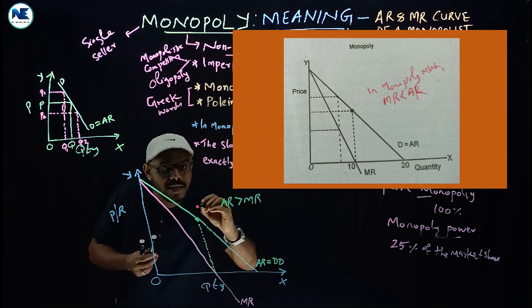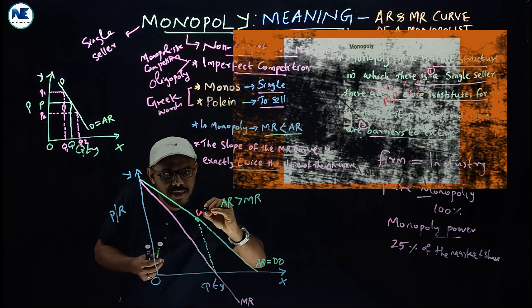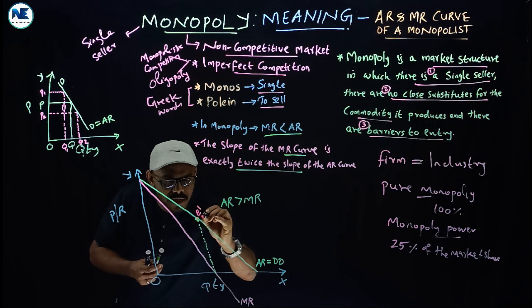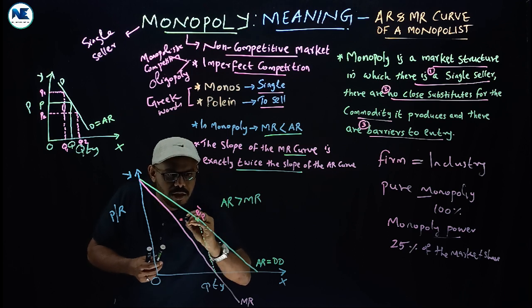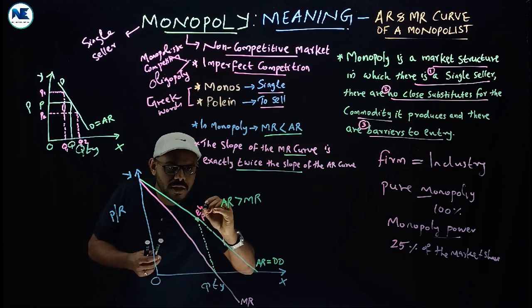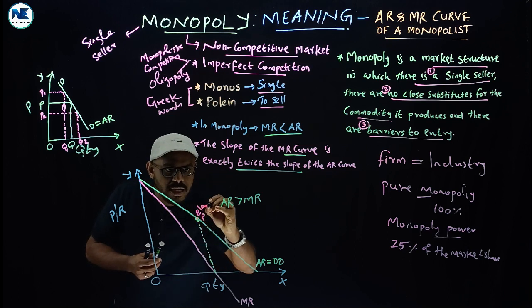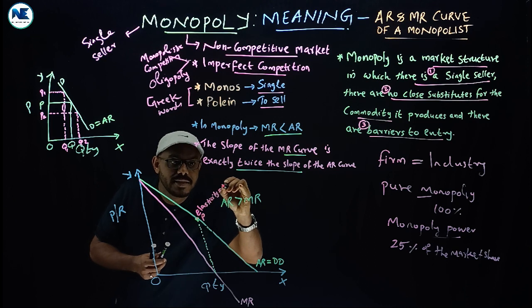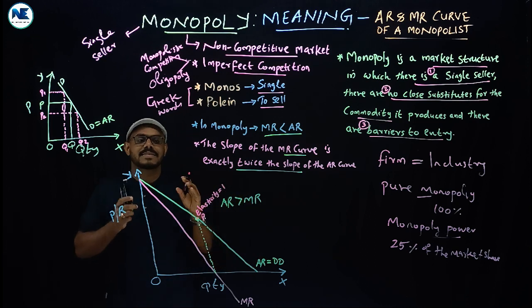We are at the elasticity of the line. At exactly the midpoint of the average revenue curve, P is going to vary such that elasticity is equal to 1 — that is, unitary elasticity.